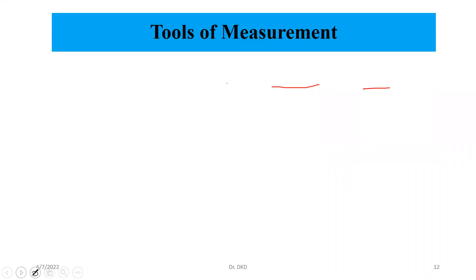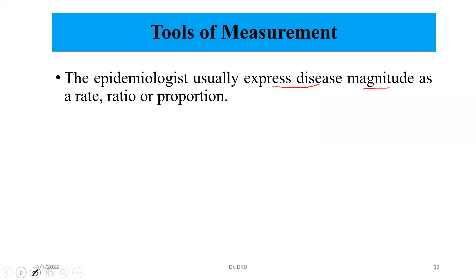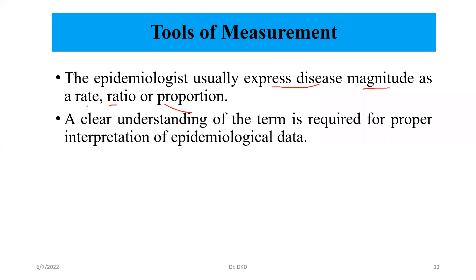Hello. Do you know the tools of measurement in epidemiology? If you don't know, try to understand. Epidemiologists usually express disease magnitude as a rate, in terms of ratio, or in terms of proportion. A clear understanding of these terms is required for proper interpretation of epidemiological data.